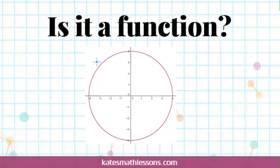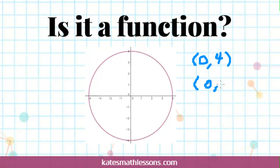A function can also be shown as a graph. If you're given a graph and asked if it's a function, you can start writing out some of the ordered pairs. On this circle, I see the point (0, 4), but I also see the point (0, −4). This is a problem — the graph has taken the input of 0 and assigned it to both 4 and negative 4. A function can only take an input value and assign it to one output, so anytime two different Y values are assigned to the same X, that's a problem.